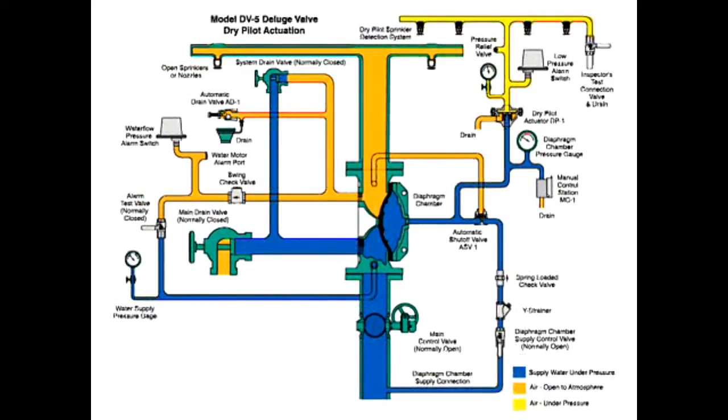The system is shown ready for dry pilot actuation. The dry pilot detection system piping contains air under pressure, shown here in yellow. The water supply contains water under pressure, shown here in blue.